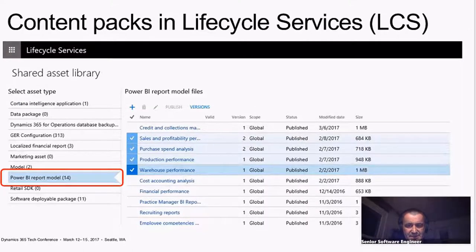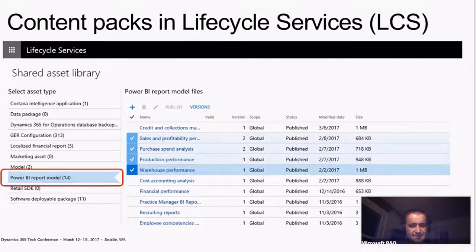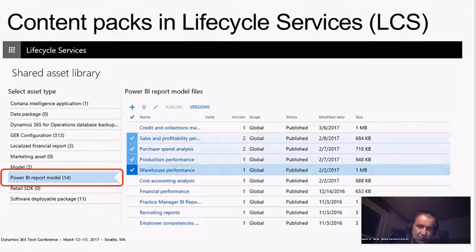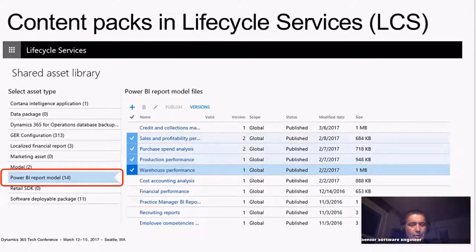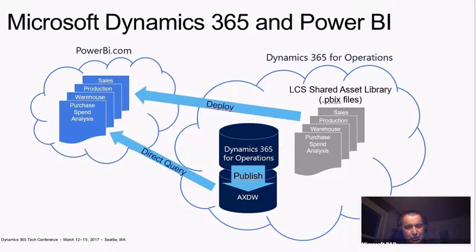The next step in the setup is to go to LCS and pick one of the content packs released — it could be sales, production, warehouse, or purchase/procurement. What happens in the shared asset library on LCS is you pick one of these packs and import it into your own environment. Once you have the pack in your environment, you bind together the data warehouse database with a connection string to Power BI. You bind the Power BI.com credential account together with the AXDW database, enabling you to access the data you published there.